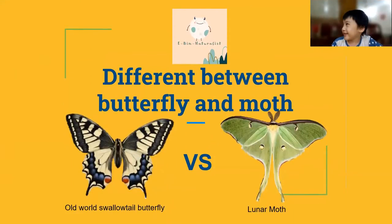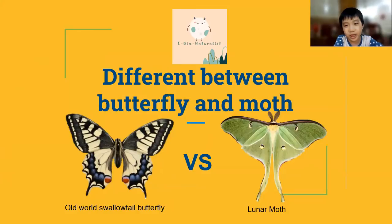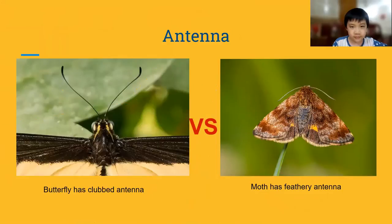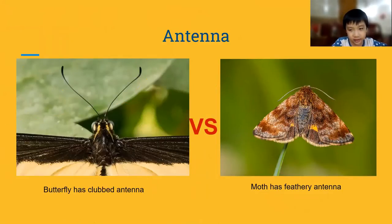Today, I am going to share with you the difference between a butterfly and a moth. Number one: antennae. Butterflies have clubbed antennae. Moths have feathery antennae.